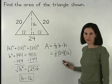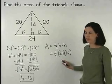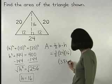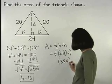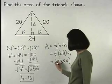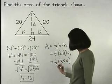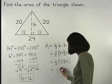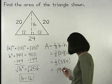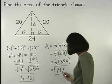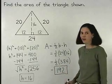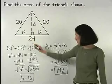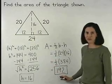24 times 16 is 384, so we have one-half times 384, which equals 192. So the area of the original triangle shown is 192.